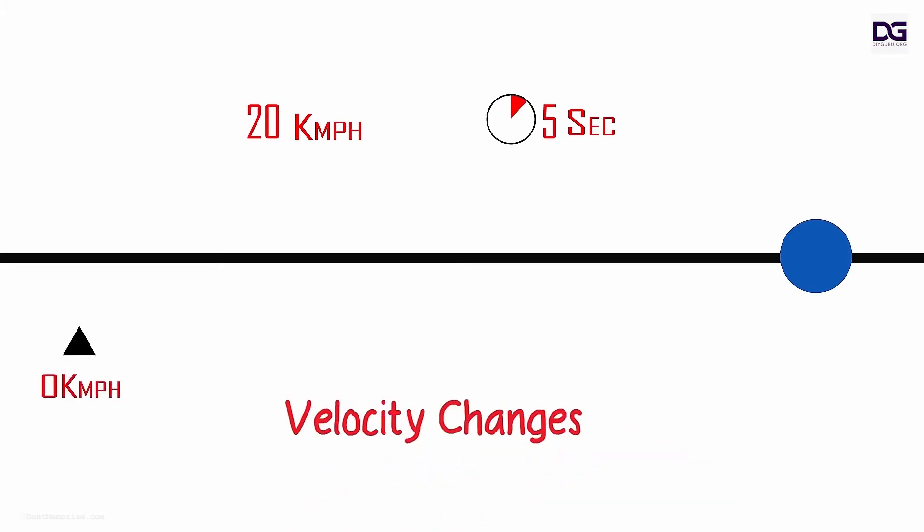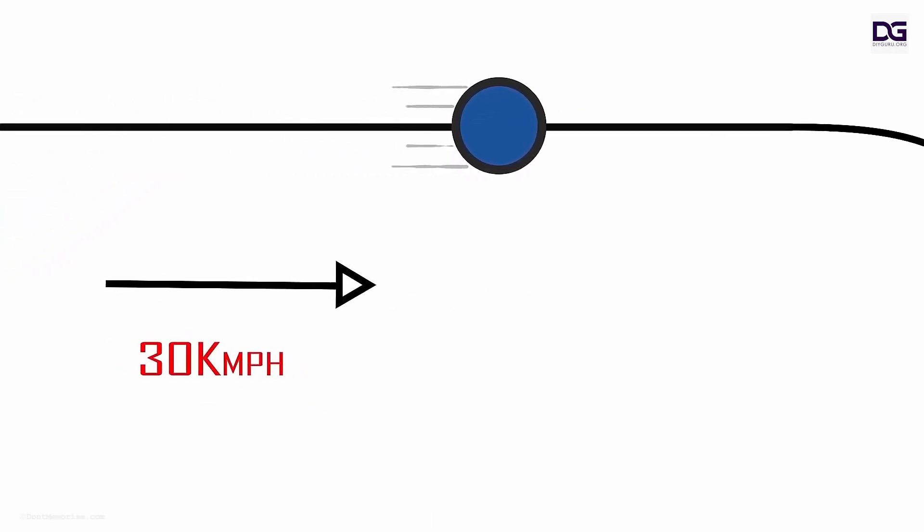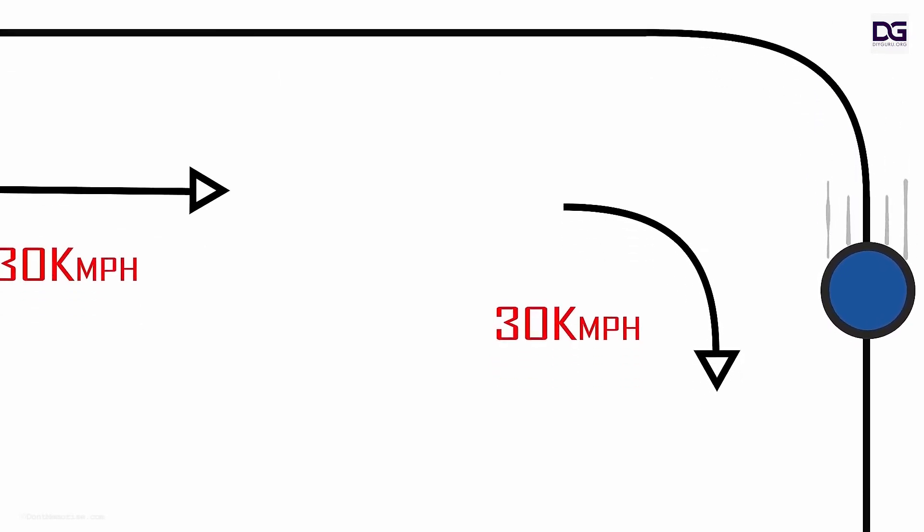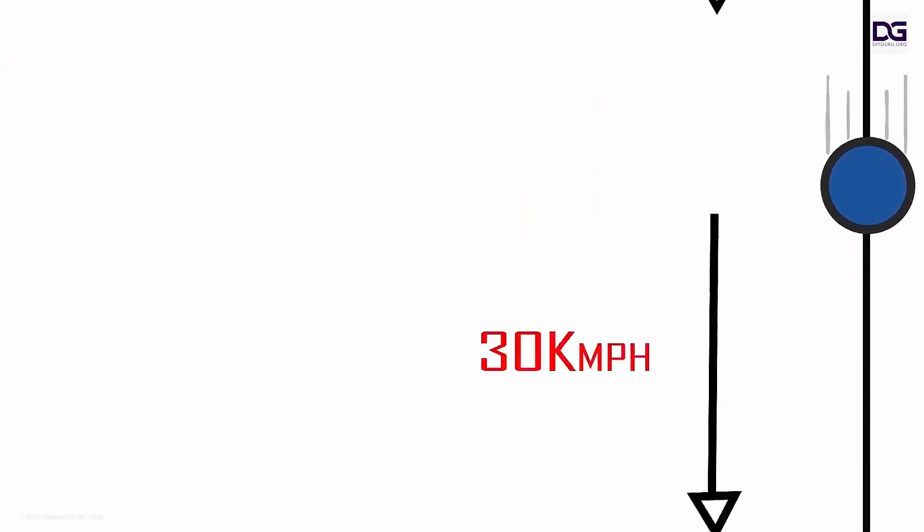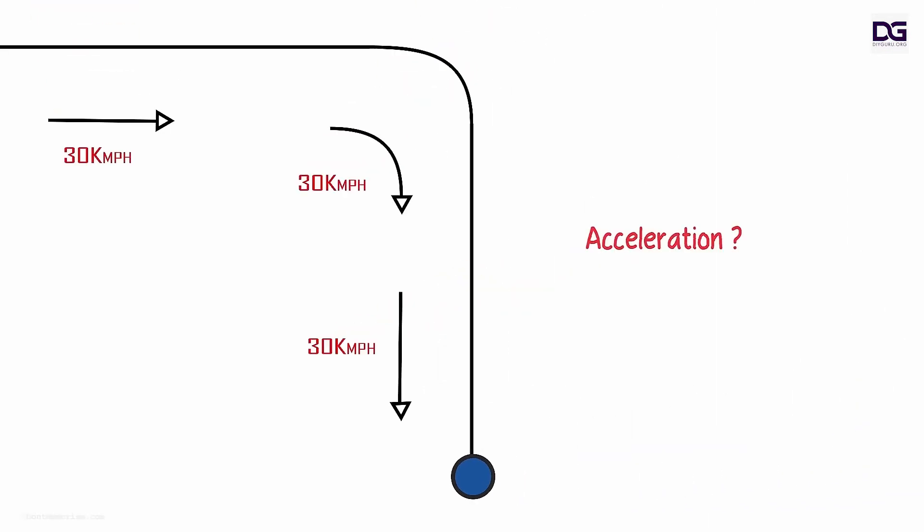In another scenario, assume that a body is moving at 30 kilometers an hour and then it moves right at 30 kilometers an hour and continues traveling at the same speed of 30 kilometers per hour. Will there be acceleration in this case?